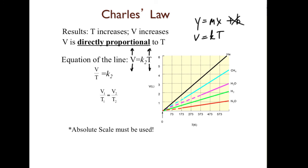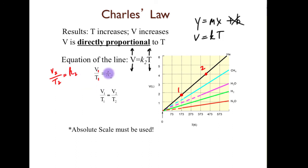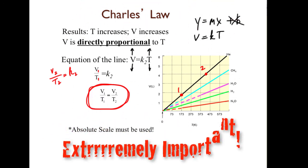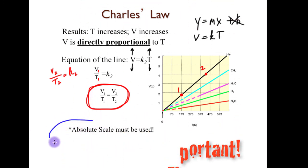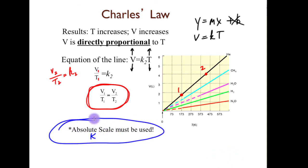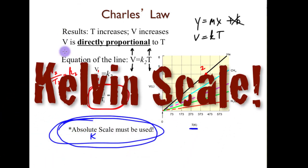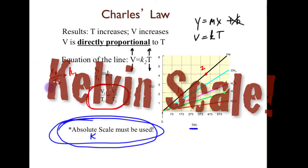Just like with Boyle's Law, we pick two points on the graph — point one and point two. Since the slope is constant, V₁/T₁ = V₂/T₂. What's extremely important about Charles's Law is that you must use the absolute scale — you must use Kelvin. Otherwise this equation will not work. Students make this mistake quite often, so don't forget: temperature must be in Kelvin.